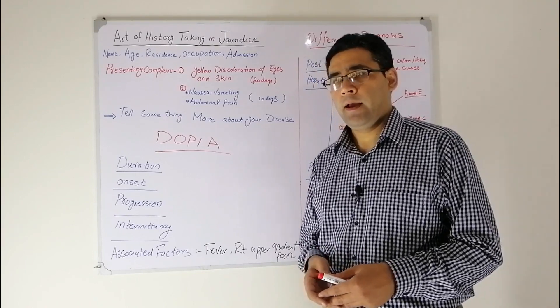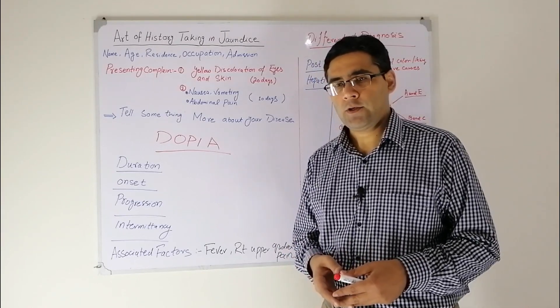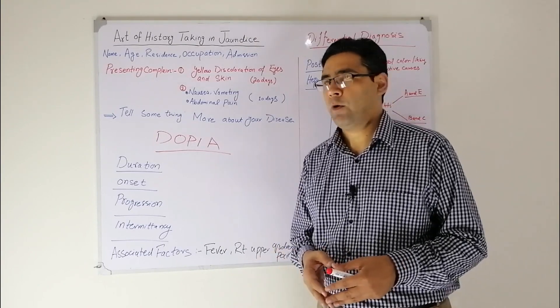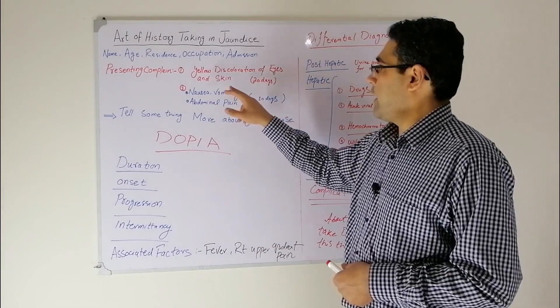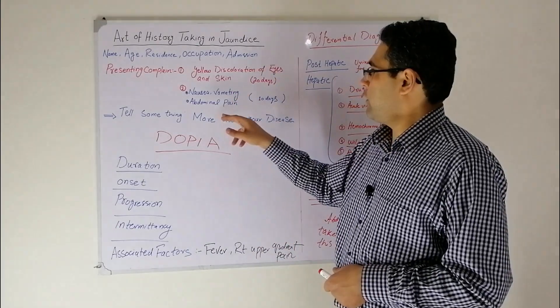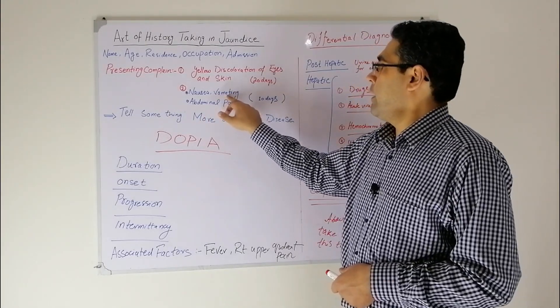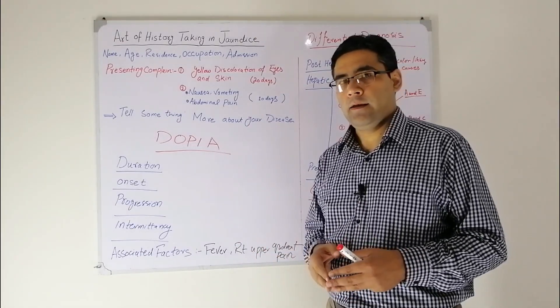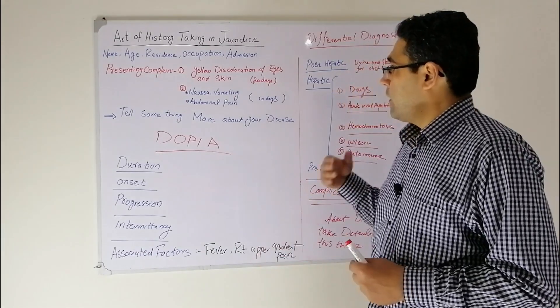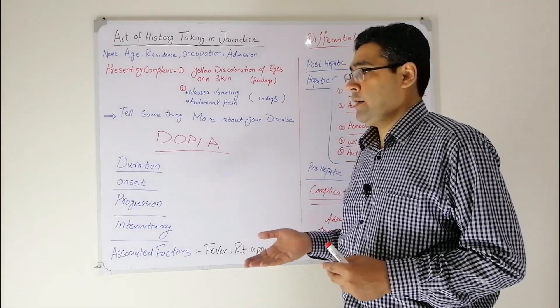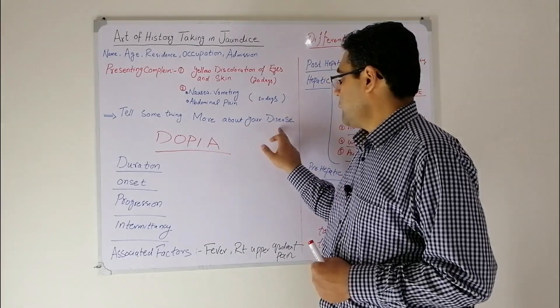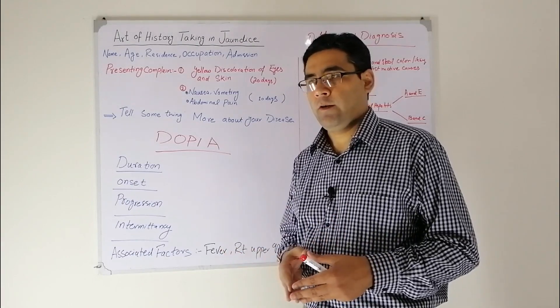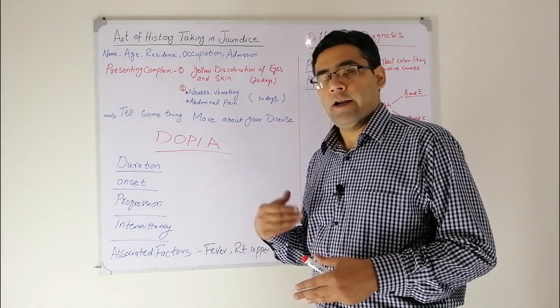At this time, I want to share some information with you. In some cases, the patient does not give history about the yellow discoloration of his eyes and skin and he is more concerned about the abdominal pain and vomiting. So again ask the patient to tell something more about the disease.